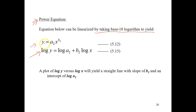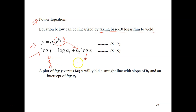So this gives us log y on the left side, log a2 as the y-intercept, and b2 log x from the exponent rule. A plot of log y versus log x will yield a straight line with slope of b2 — that's your slope or gradient m — and an intercept of log a2, which is your y-intercept c.